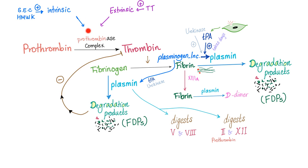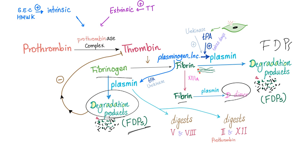Intrinsic and extrinsic coagulation pathways → prothrombinase complex converts prothrombin to thrombin → thrombin converts fibrinogen into fibrin. Then we need plasmin to degrade the fibrin. But plasmin is present in the inactive form plasminogen. We need TPA or urokinase to activate plasminogen into plasmin. Now plasmin degrades fibrin into fibrin degradation products, stabilized fibrin into D-dimer, and fibrinogen into fibrinogen degradation products. It also digests factors 5, 8, prothrombin, and 12. The fibrin degradation products will inhibit thrombin — because if you have enough fibrinogen degradation products, why produce new ones?